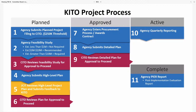There are 11 steps in the KETO process, starting with four phases: Planned, IT Approved, Active, and Completed. Starting with Planned — an agency with a project estimated at $250,000 or more must submit a planned request. House Bill 2077, introduced by Representative Hoffman, would change that threshold from a fixed $250,000 to a risk-based threshold, so KETO-reportable projects would be those deemed high risk.